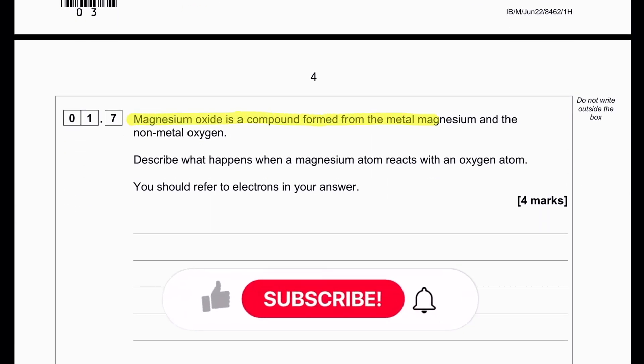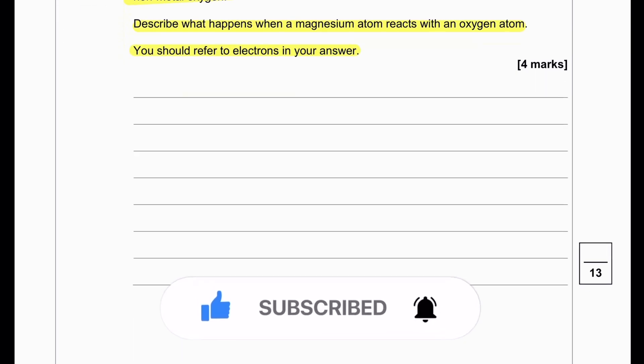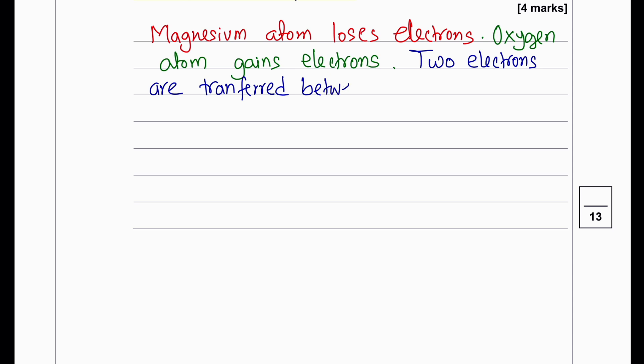Magnesium oxide is a compound formed from metal magnesium and non-metal oxygen. Describe what happens when a magnesium atom reacts with an oxygen atom. Magnesium is a metal, so it loses two electrons. Oxygen is a non-metal, it gains two electrons. Magnesium forms Mg2+ ions and oxygen forms O2- ions. Basically, two electrons are transferred between them.